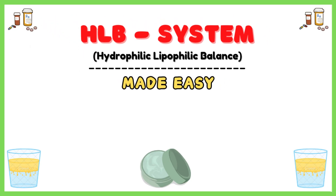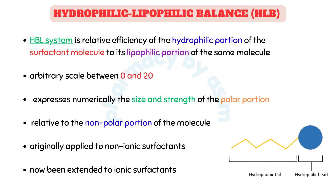Hydrophilic-lipophilic balance, or HLB, is the balance of the size and strength of the hydrophilic and lipophilic moieties of a surfactant molecule. The HLB system represents the relative efficiency of the hydrophilic portion of the surfactant molecule to its lipophilic portion of the same molecule. This system has an arbitrary scale between 0 and 20, which numerically expresses the size and strength of the polar portion relative to the non-polar portion of the same molecule.